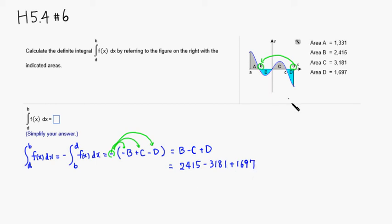I'm going to add these guys up: 2.415 plus 1.697. So it's going to be 4112, and we subtract 3181. Two minus one is one, and eleven minus eight is three, and ten minus one is nine. So this is equal to 931.